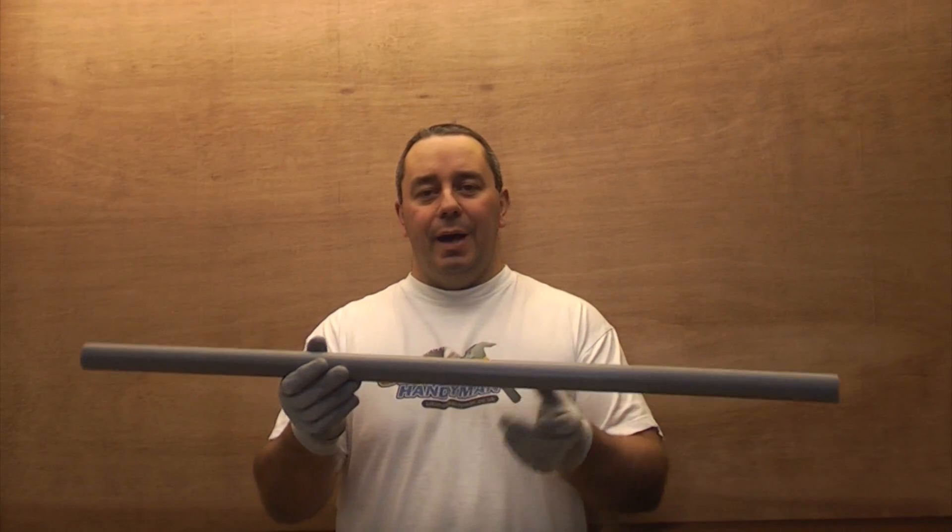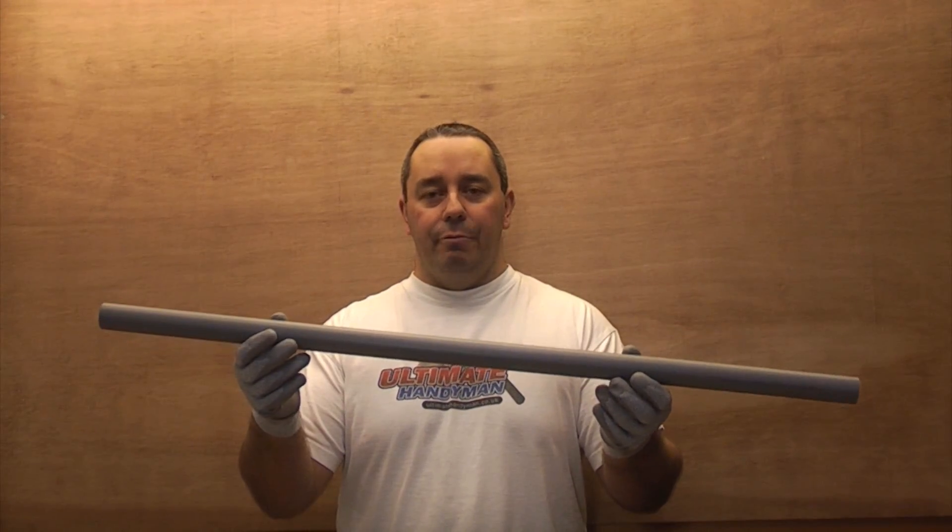That's a piece of solvent weld. So you often find these in your property, and this particular one is 32mm. For domestic properties they usually come in 32mm and 40mm. This is the kind of waste pipe that you get leading from your basin in your bathroom.